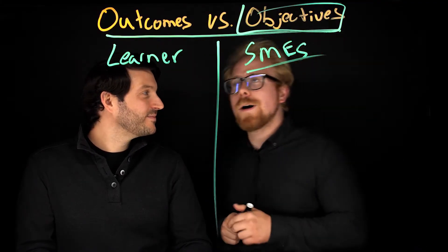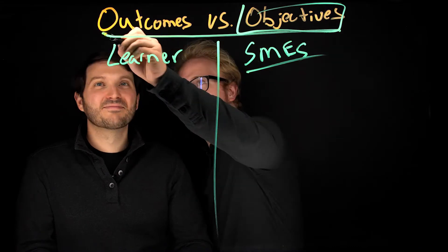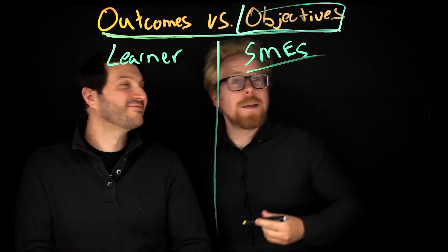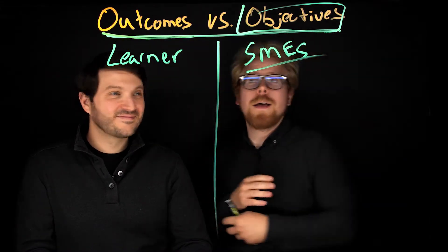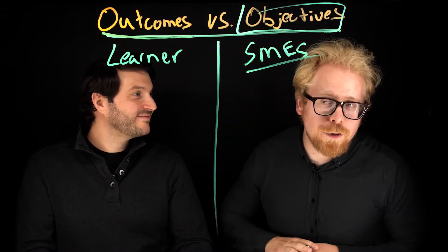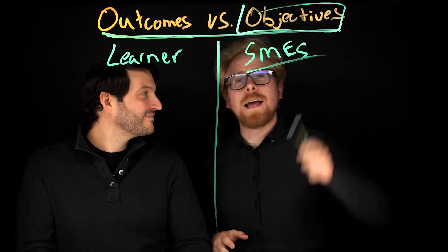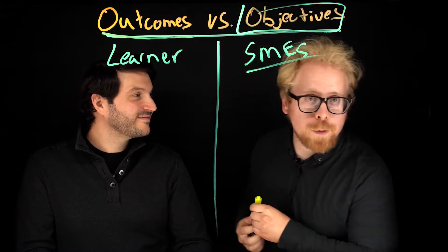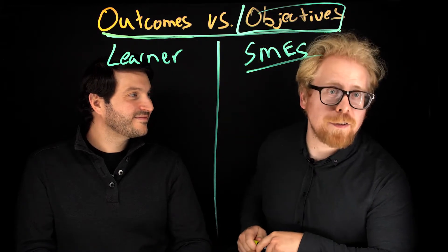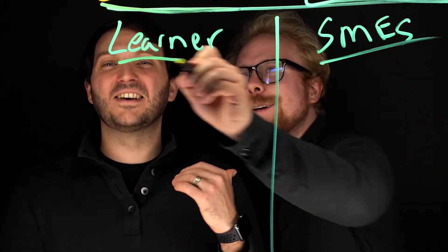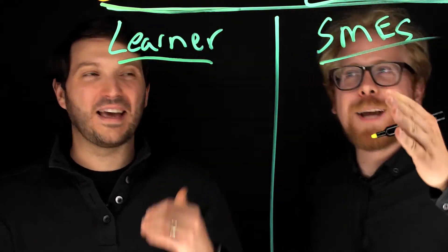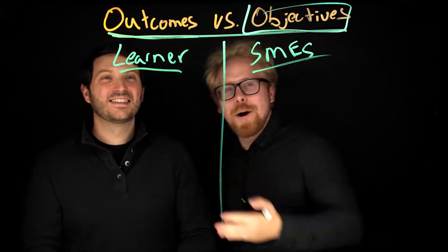The objective they have for you is for you to learn addition. But what is the outcome for you? The outcome is — fast forward 15 years into the future — and you can properly file your taxes. That is the difference between objectives and outcomes.